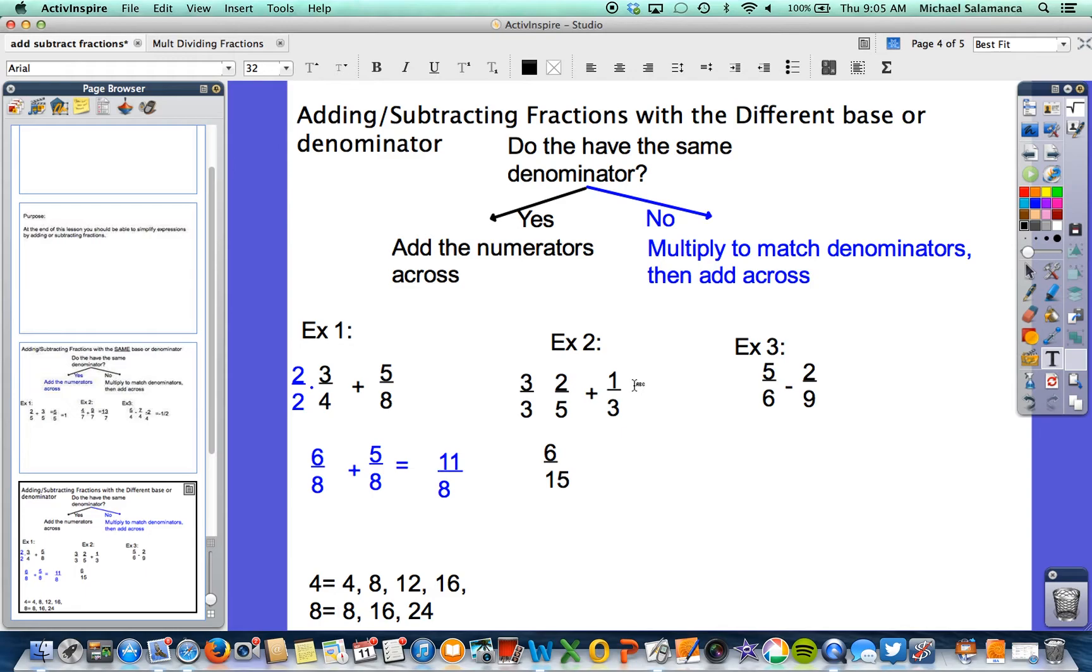And on the right side for 1 third, we have to multiply that by 5. Again, what we do to the bottom, we do to the top. And that's going to give us 5 fifteenths. And now this should be an easy problem. 6 plus 5 is 11. And we're left with 11 fifteenths.